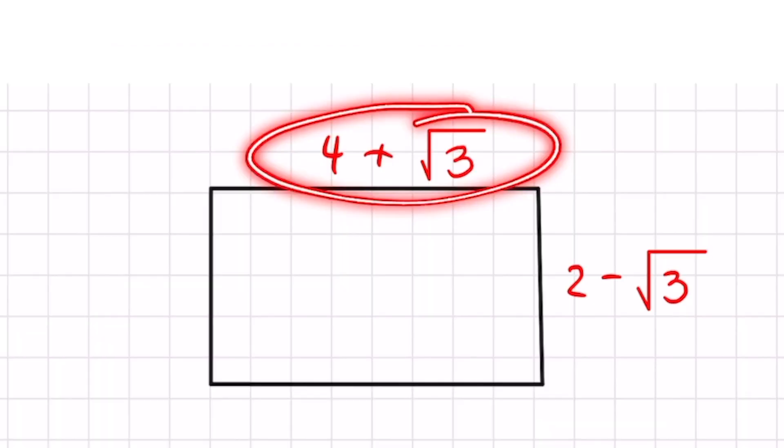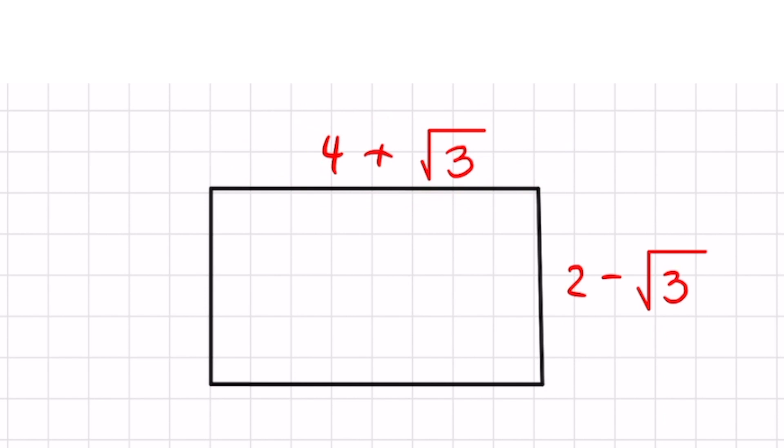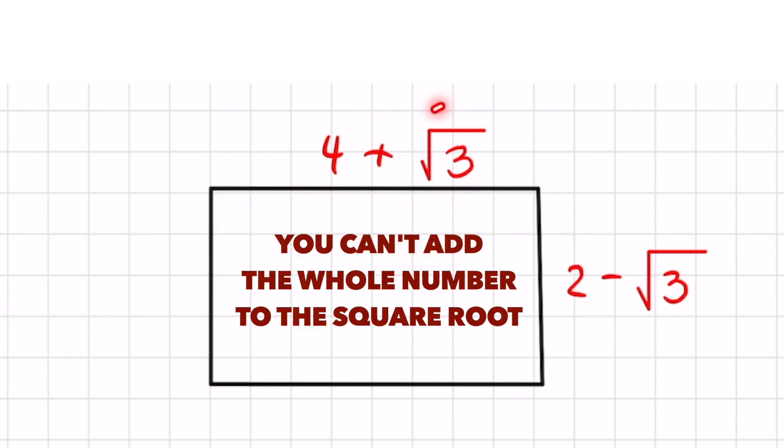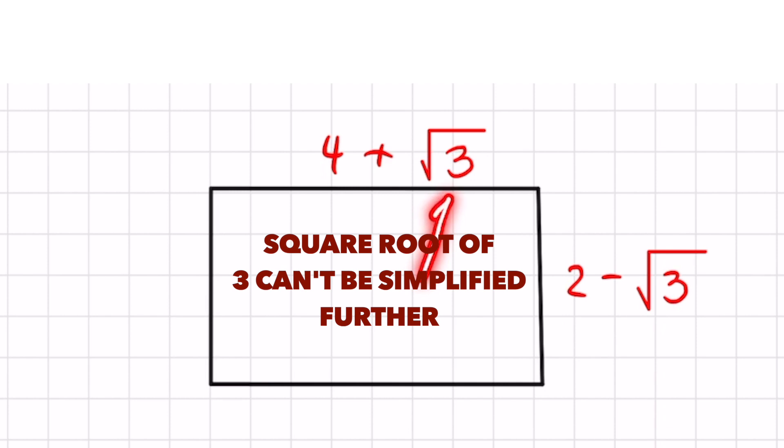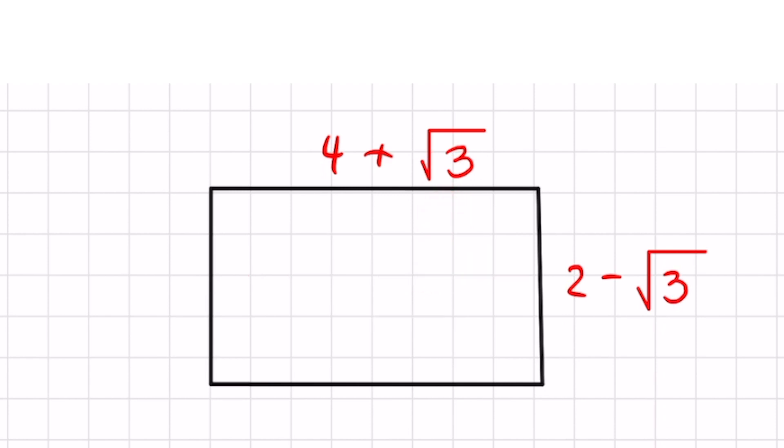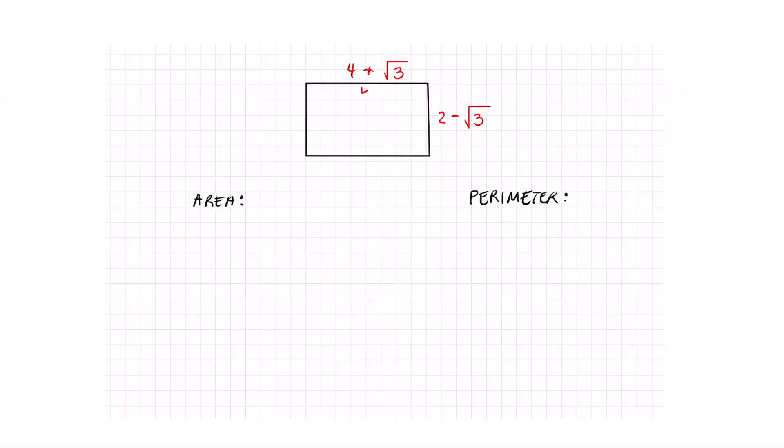And if I look at my length, I cannot simplify that. First, I cannot add 4 to square root of 3 because this one's in a square root. And the second thing is I cannot divide square root of 3 by a perfect square. So I can't simplify that. This is the same reason for my width. Let's label that length and width and let's move on to the area.